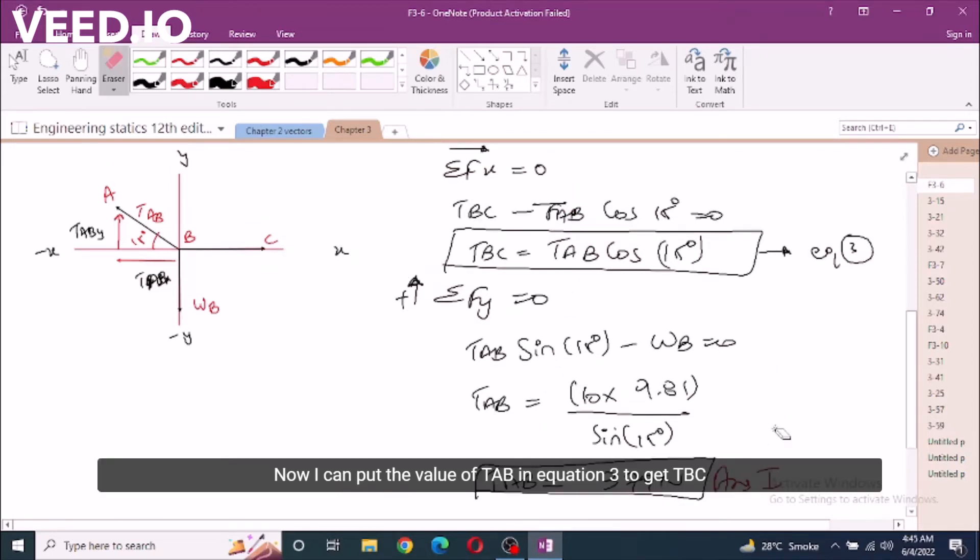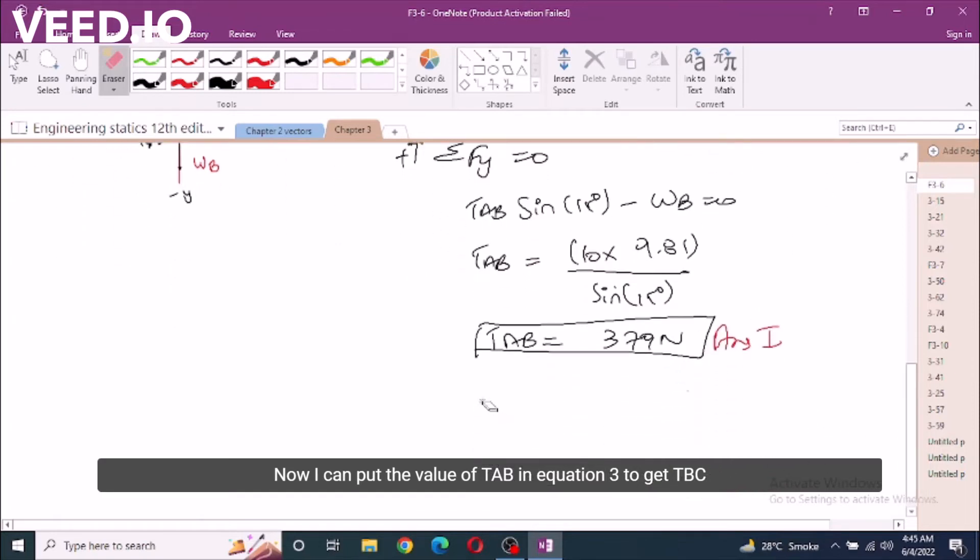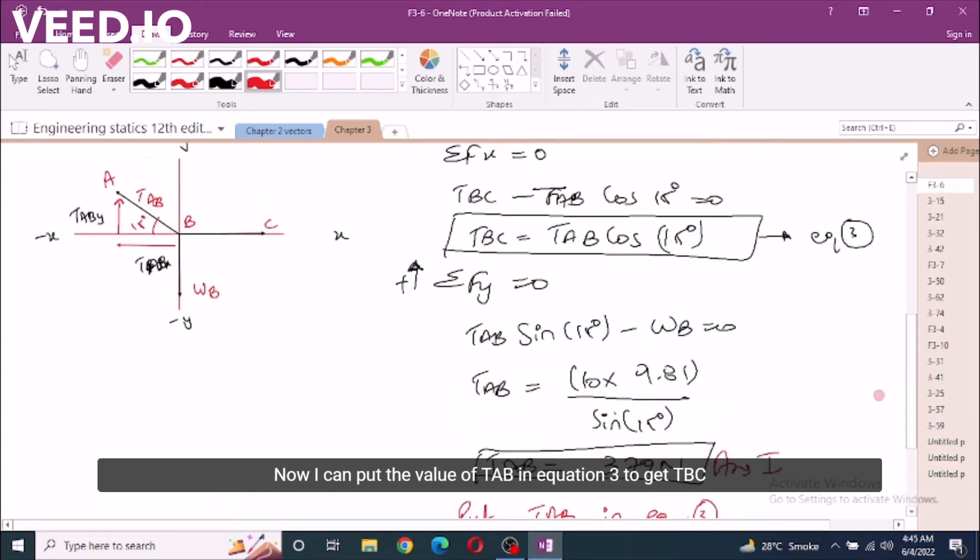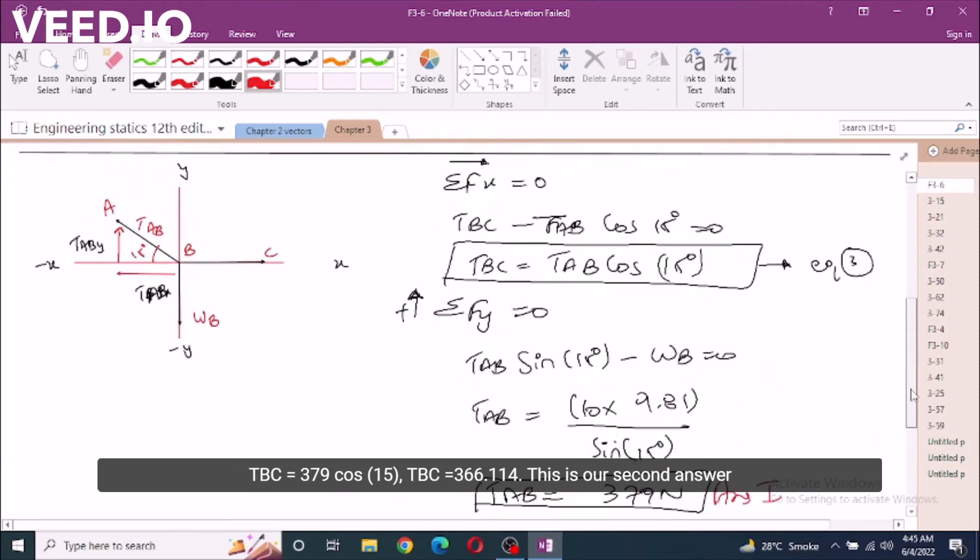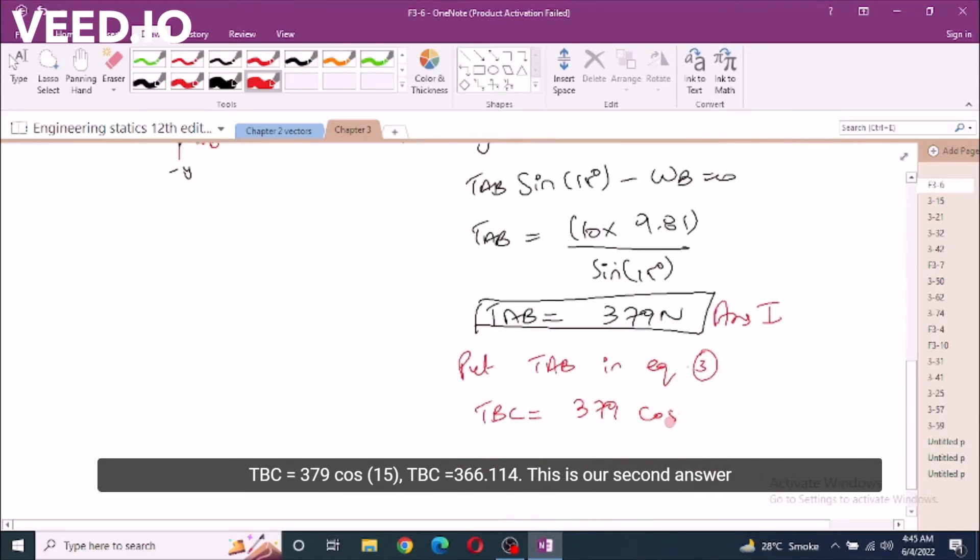Now I can put the value of TAB into equation 3 to get TBC. Put the value of TAB into equation 3, TBC equals 379 cos 15 degrees. TBC equals 366.114 newtons. Our second answer.